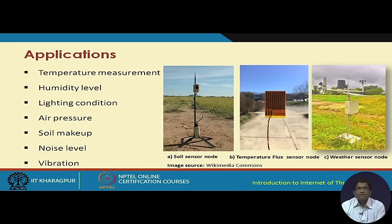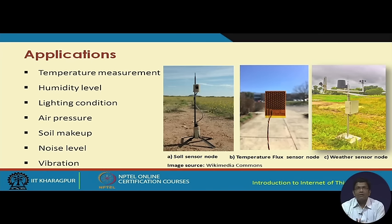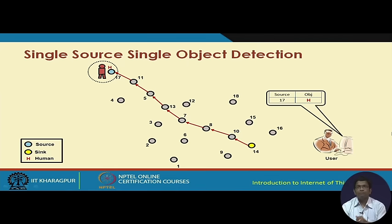Here are a few examples of sensor nodes: soil sensor nodes, temperature sensor nodes, weather sensor nodes, and so on, all deployed in real life for applications such as temperature measurement, humidity levels, lighting conditions, air pressure, soil makeup, noise, distance levels, vibration, and so on. Now let us look at a few important concepts in sensor networks.